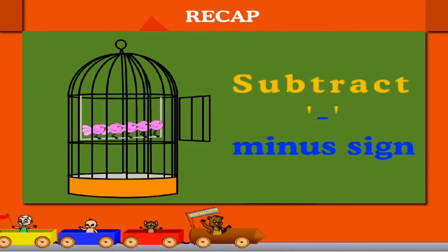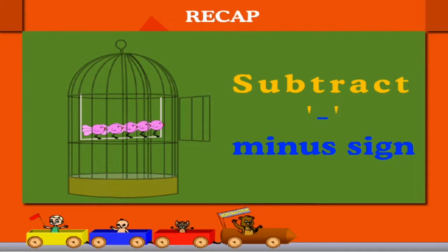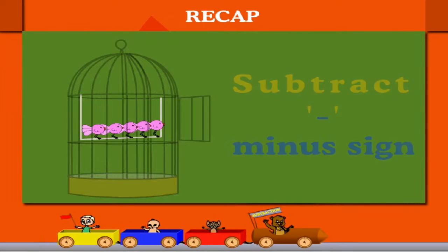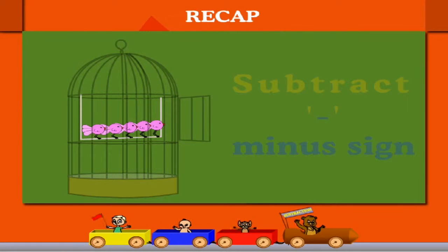Recap. Here is a cage with 5 birds. Let's remember the minus sign for subtract with this example.